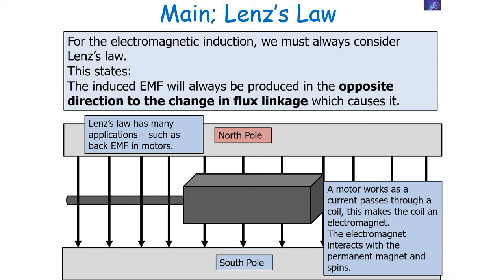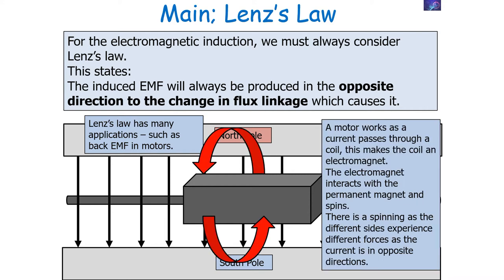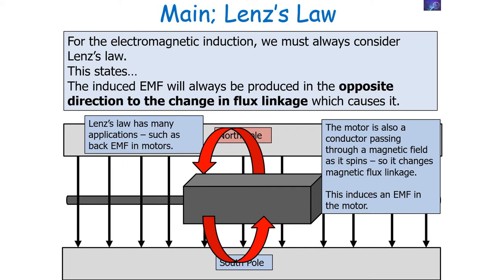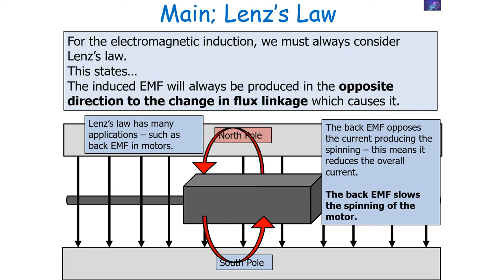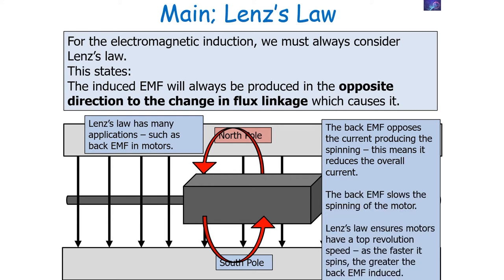Lenz's law has many real-world applications, such as back EMF in motors. A motor works as a current passes through a coil making it an electromagnet, which interacts with a permanent magnet and spins. As the conductor rotates, there's a change in flux linkage, inducing an EMF — but Lenz's law states this EMF is produced in the opposite direction to the rotation, so this is the back EMF. The back EMF slows down the motor's spinning, ensuring motors have a top revolution speed: the faster it spins, the greater the back EMF induced.